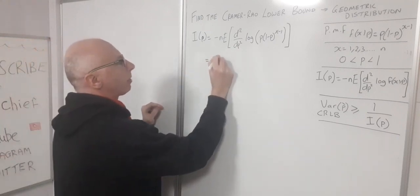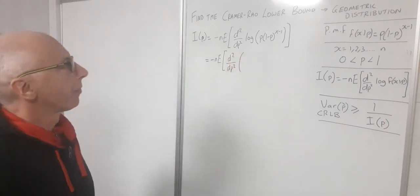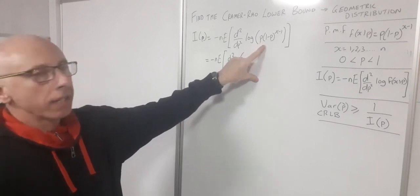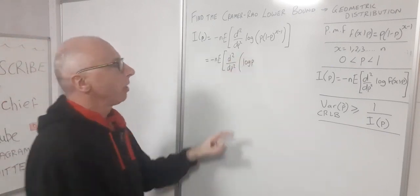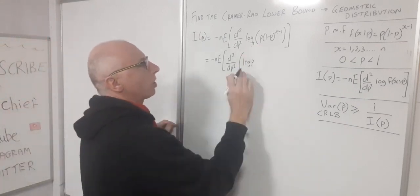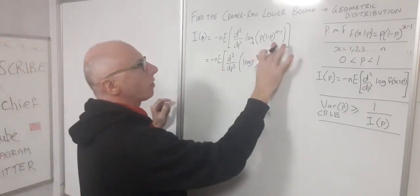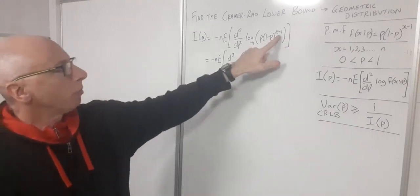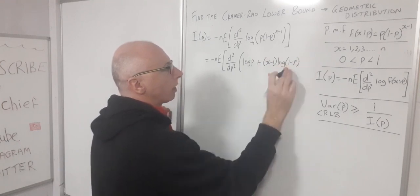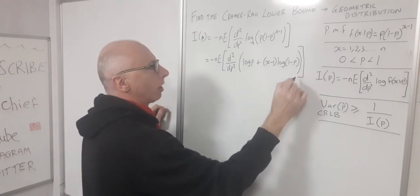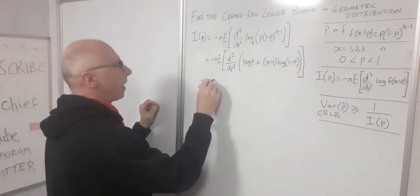We have negative n times the expectation of the second derivative. Taking the log of the PMF and using logarithmic rules, when terms are multiplied we can add the logarithms. So we get log of p plus (x minus 1) times log of (1 minus p), using the log power rule to bring x minus 1 out front. This is all natural logarithm.